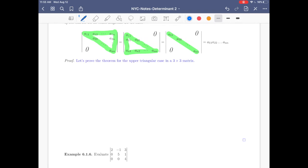Okay, let's prove this in one case, basically a very special case, the upper triangular case in the 3x3 matrix. So we have A11, A12, A13, 0, A22, A23, 0, 0, A33. Good.